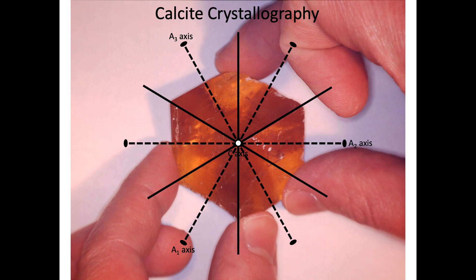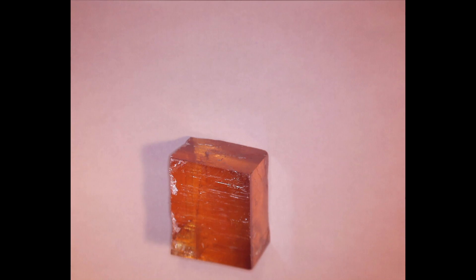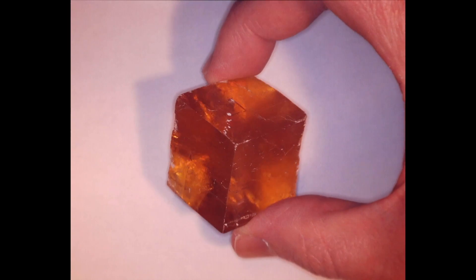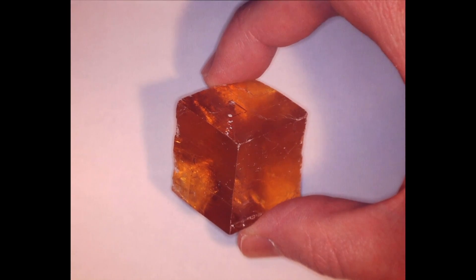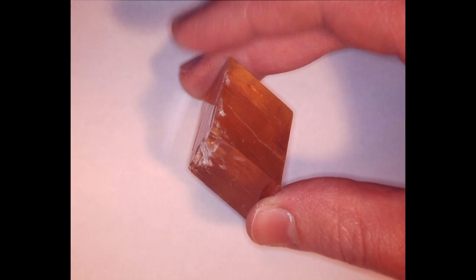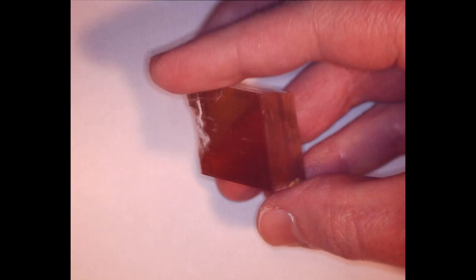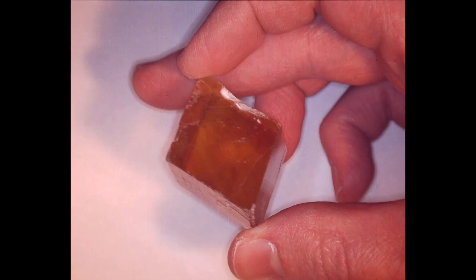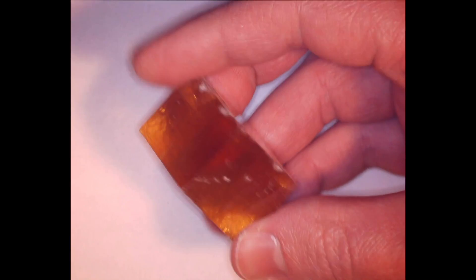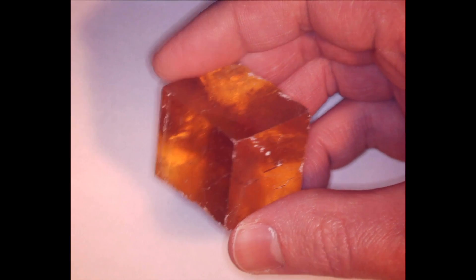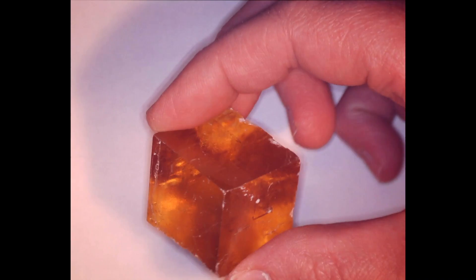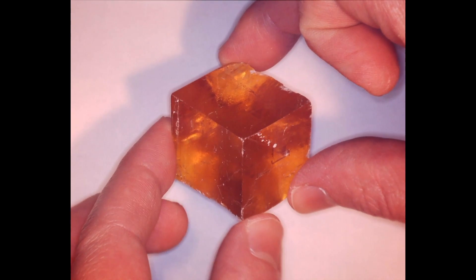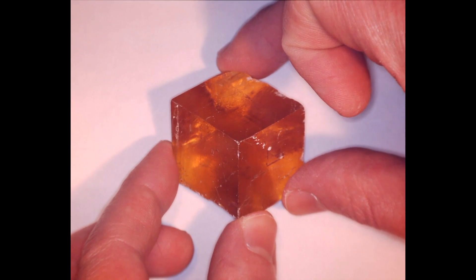Here we have a calcite rhombohedron. These are usually formed by the cleavage pattern of calcite. Sometimes you can end up with fairly complicated forms if you have both a growth form combined with cleavage breaks in calcite, but in this case this is all the pattern of the cleavage that is producing the final form we're seeing here. We're spinning this shape around to get you an idea of what it looks like in three dimensions. Now that we've rotated the mineral around a bit, let's stop here because this view is going to be one of the most important ones in understanding what's going on with our calcite.